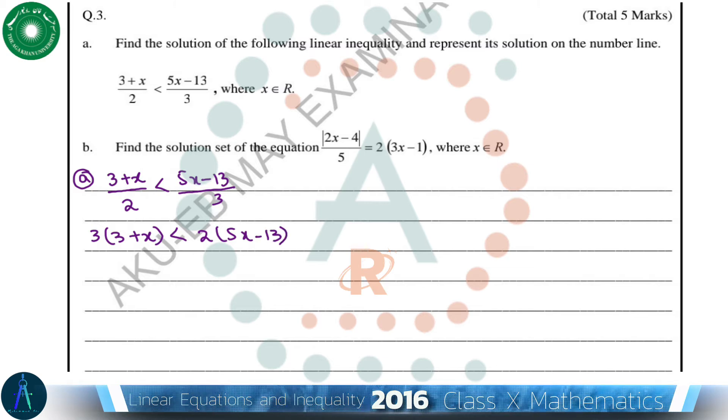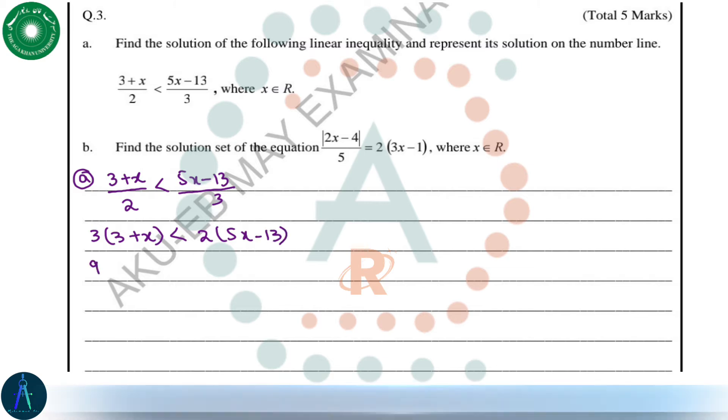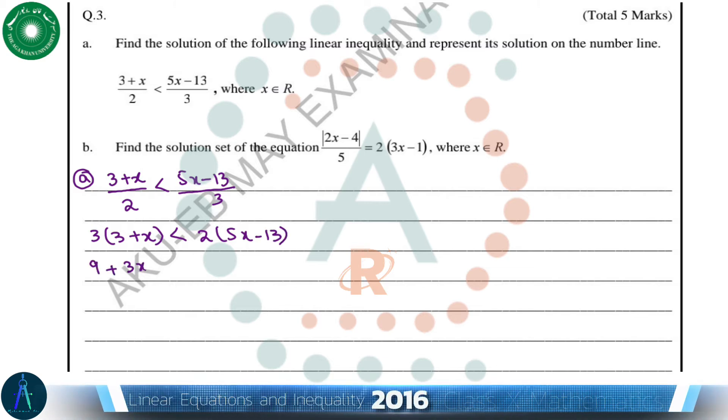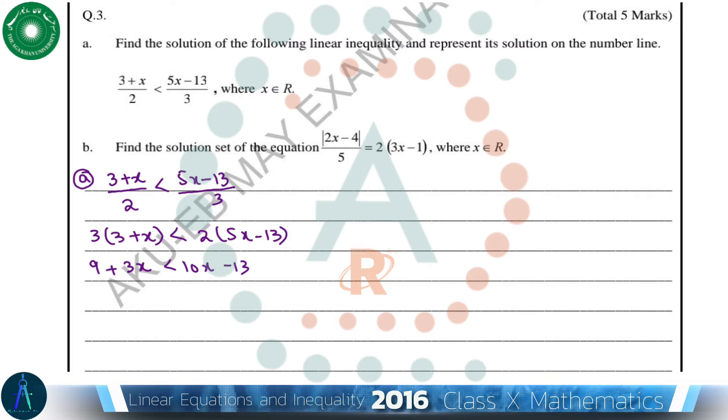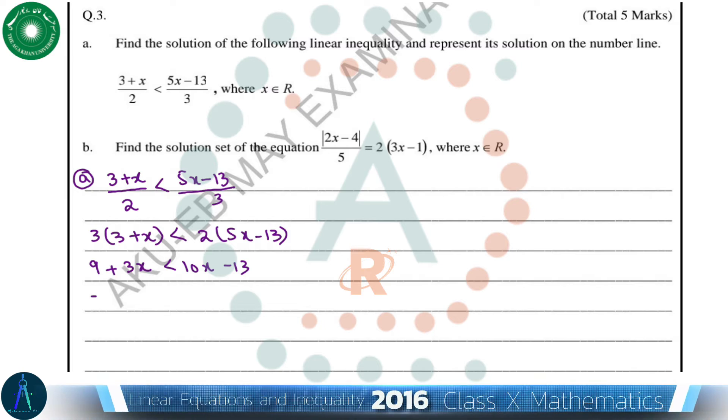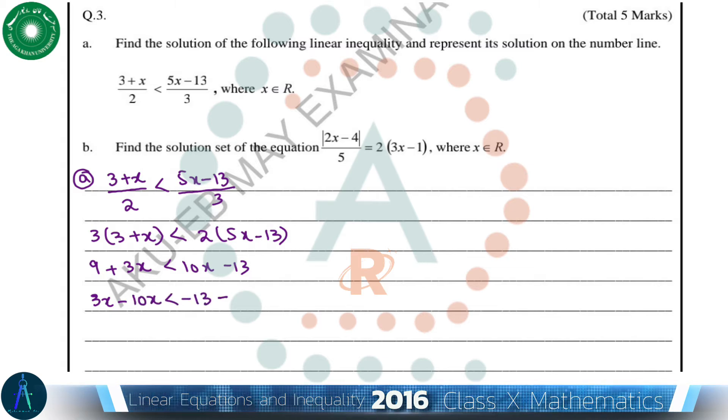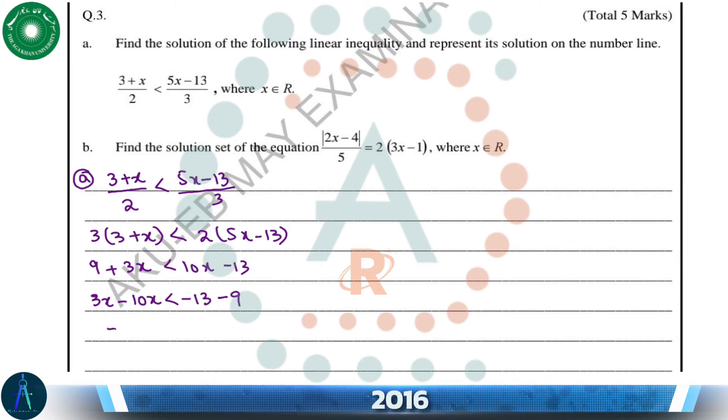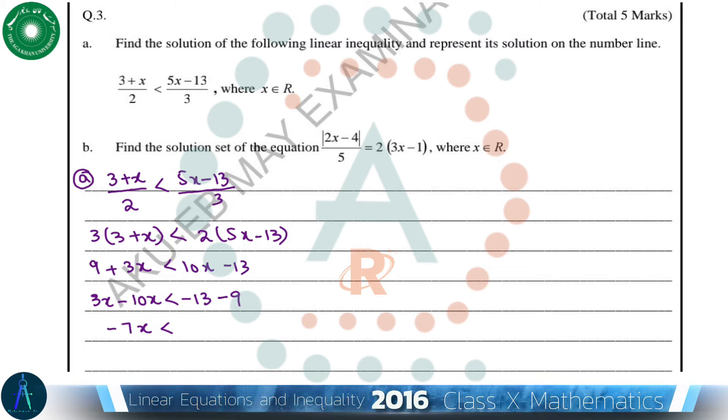Then we will get 9 + 3x < 10x - 26. Now we take 10x to the left hand side and 9 to the right hand side, so 3x - 10x < -26 - 9. So -7x < -26 and -9.